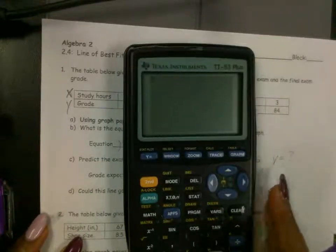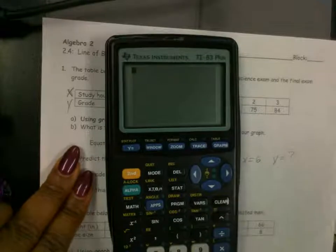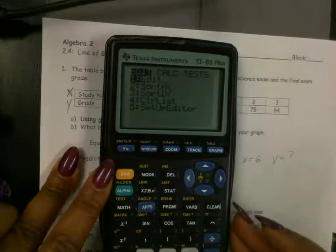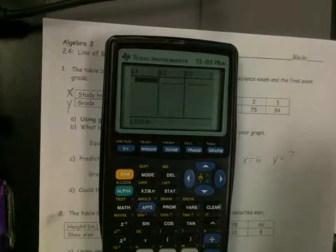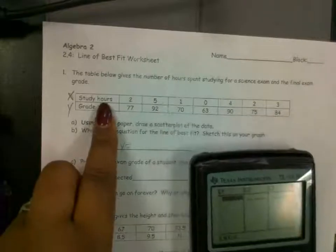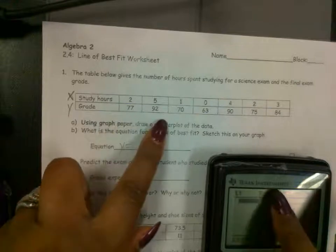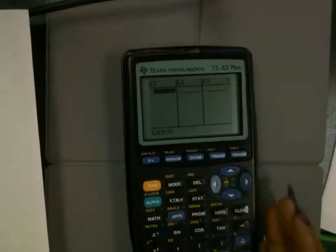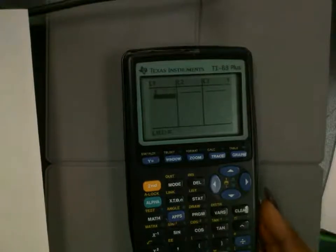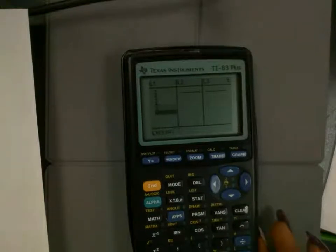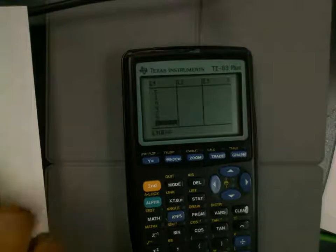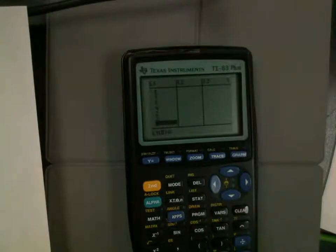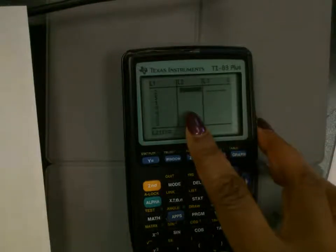Alright, so let's do it. First things first is to do the scatter plot. So we're going to press the STAT button, we're going to press enter on edit, and we're going to enter our points in. I'm going to pause because people are not ready. Okay, so now we're going to type in our numbers. We're going to type hours in for x, that's under L1, and grade under L2 for y. I'm going to call those out so you don't have to look at your paper. We have two, five, one, zero, four, two, and three.